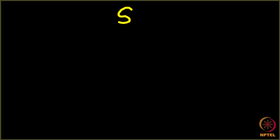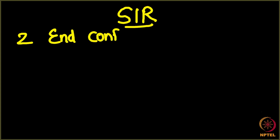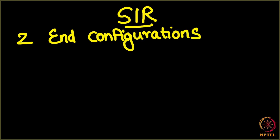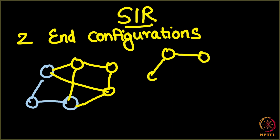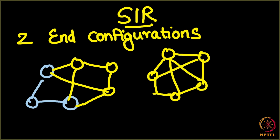For the SIR model, there are two possible ending configurations. One is that certain nodes in the network are still susceptible and the rest are recovered. The second is that every node in the network has become recovered. Whenever the SIR process runs on any network, it will end in one of these two configurations — it cannot keep running for an indefinite period of time.